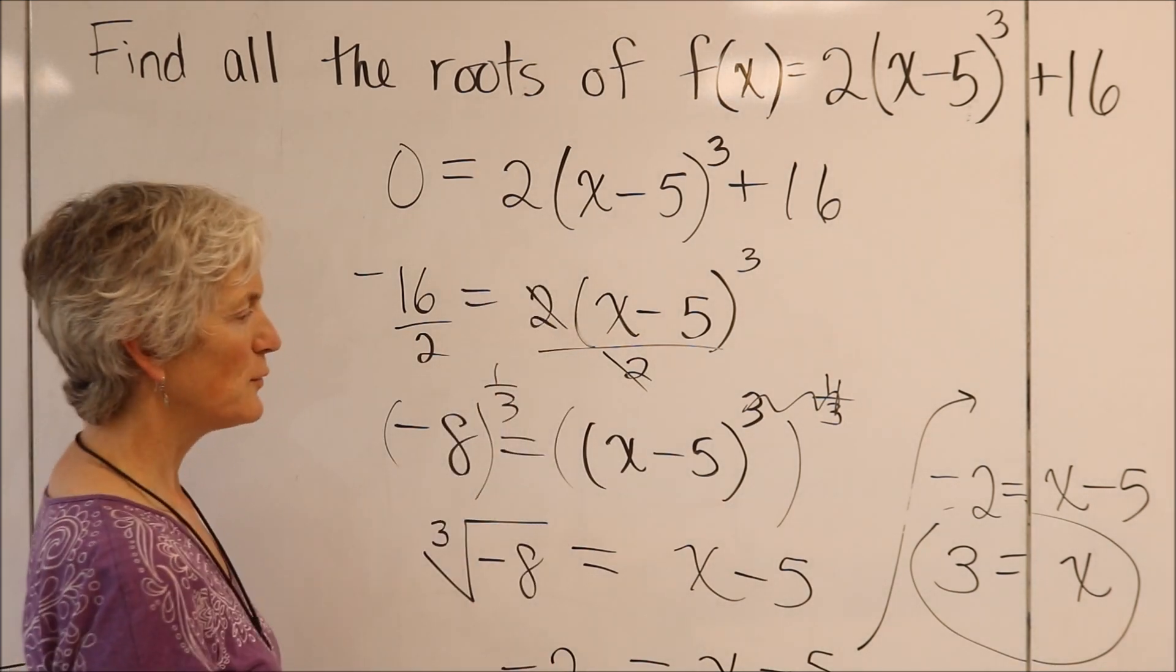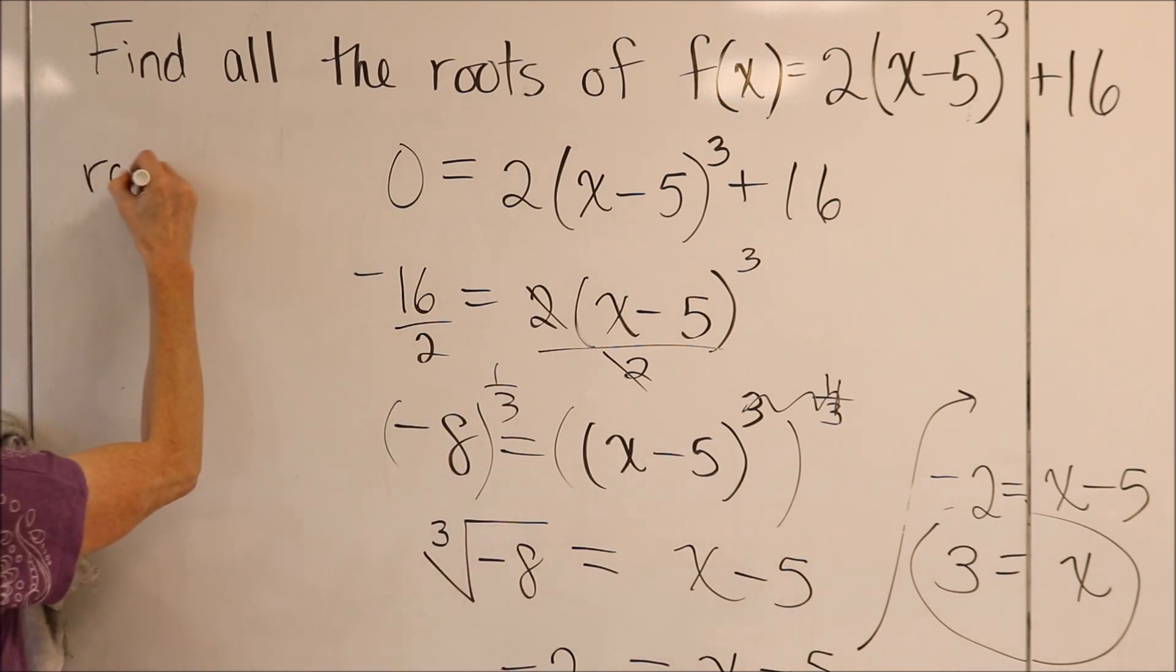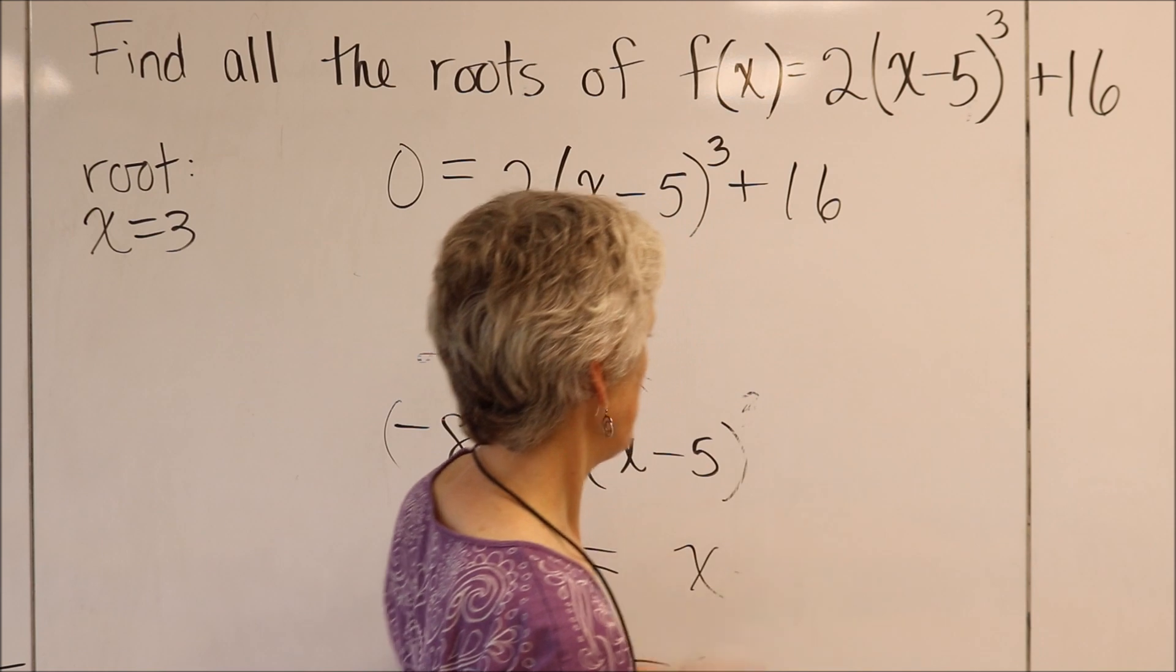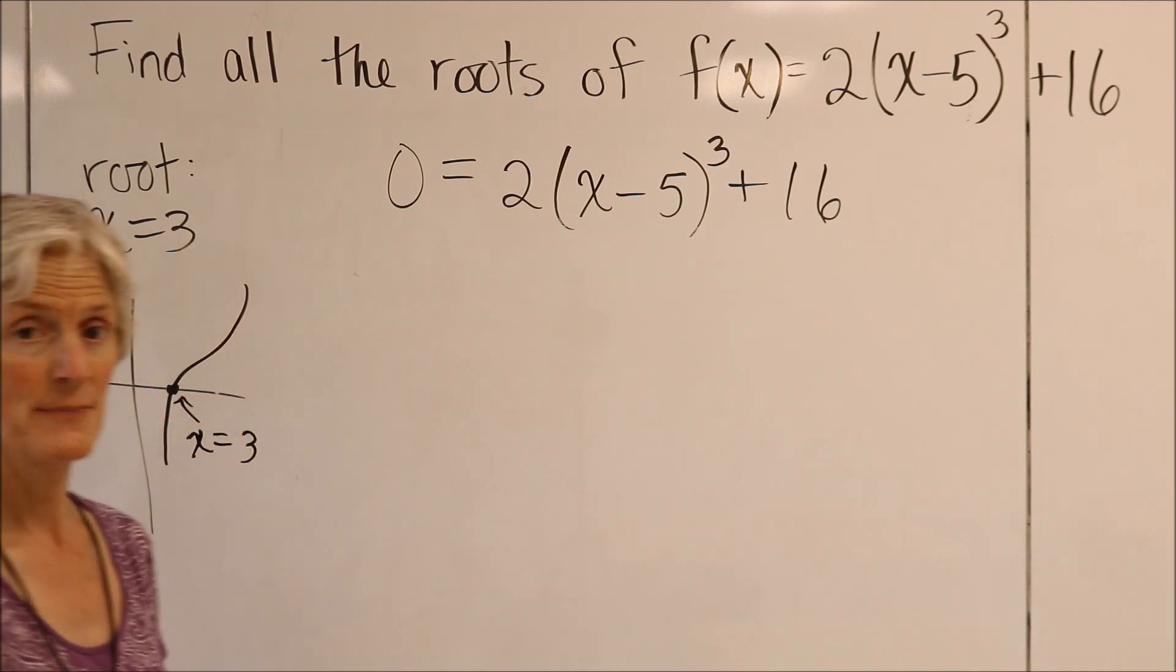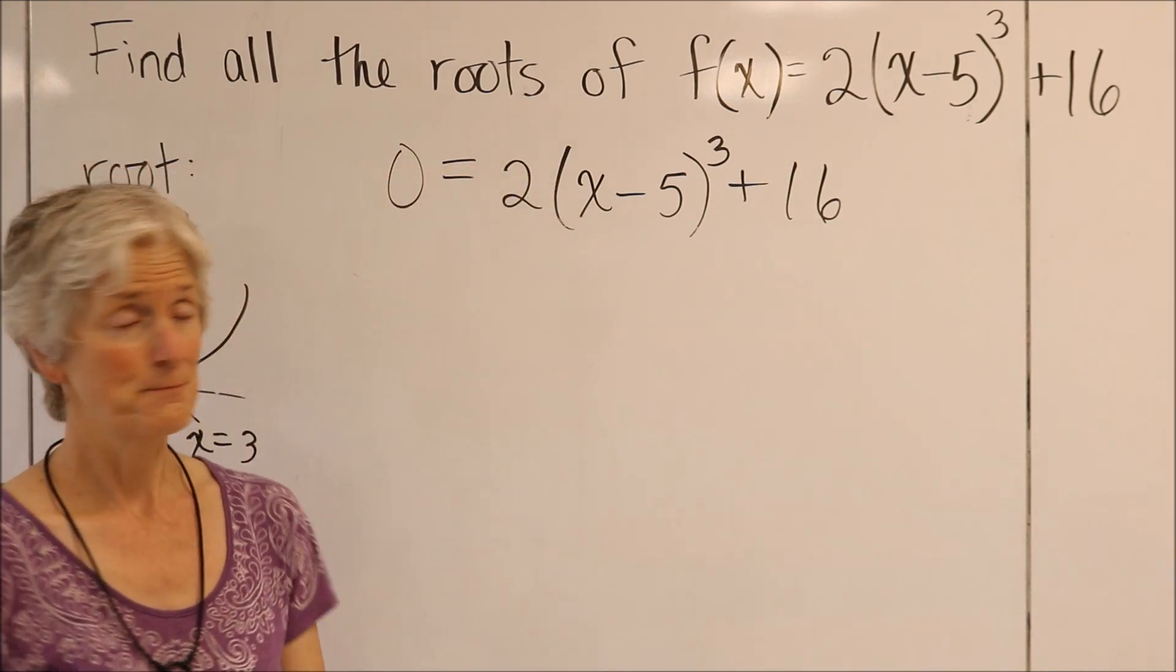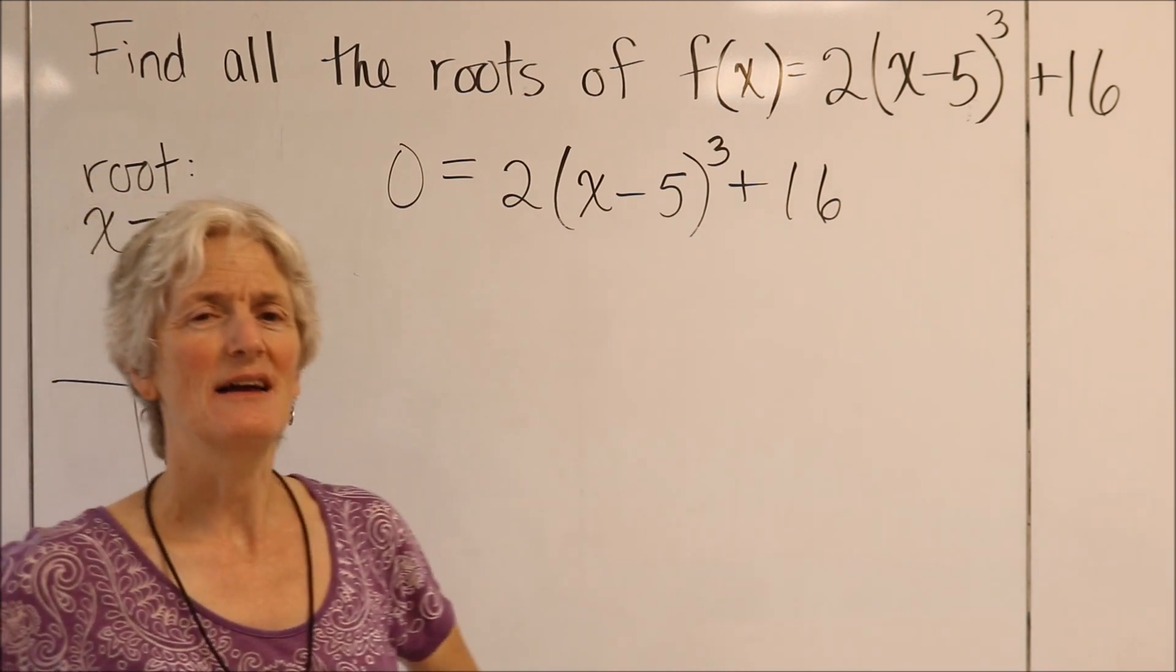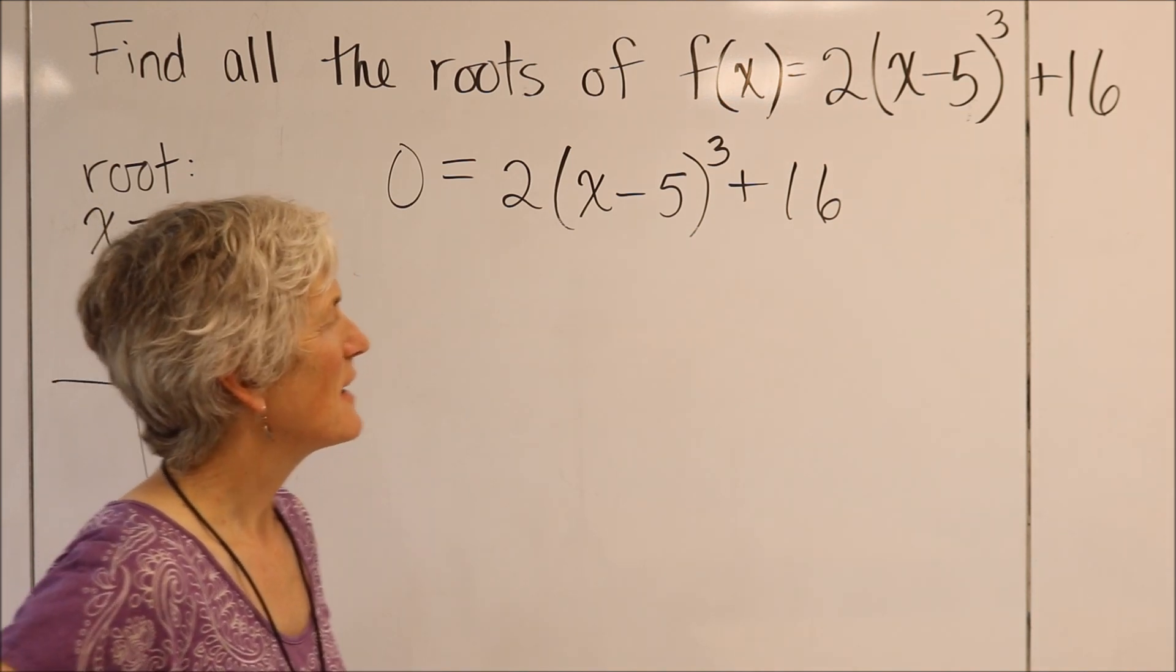All right, so I just found my real root. My real root is x equals 3. And that kind of matches the sketch I made, right? So here was my sketch. Sure, that could happen at x equals 3. So now the question is, how do I find the other roots? I know from my sketch that they're imaginary. And, gosh, I'm a little stuck as to what to do here. I have a couple of options. But you know what I think I might do?